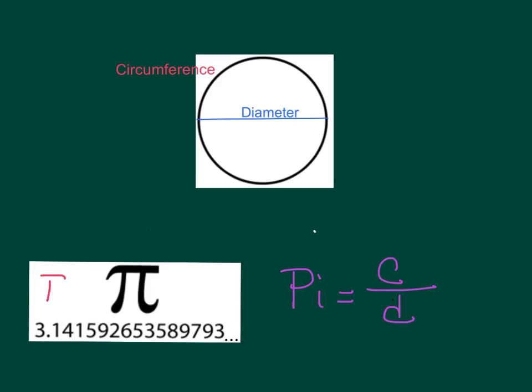The most well-known irrational number is pi. On a circle, the diameter is the distance across a circle, and it actually takes about three of those to go around a circle. It's actually a little bit more.